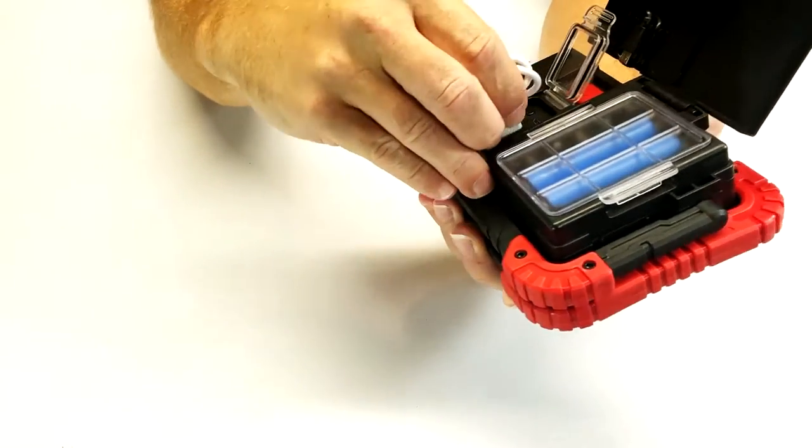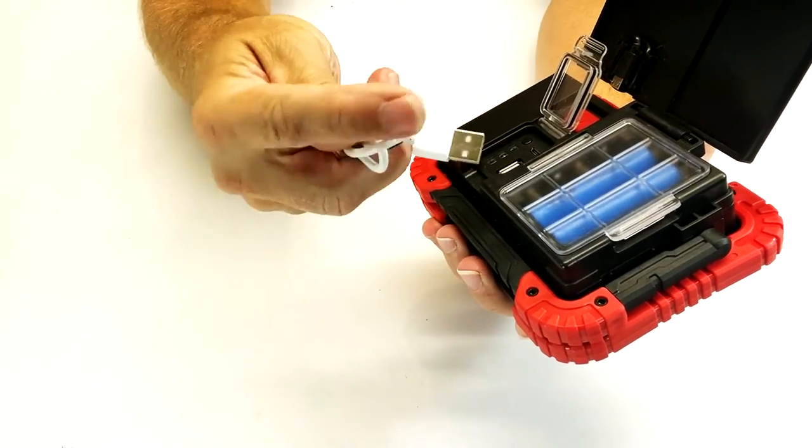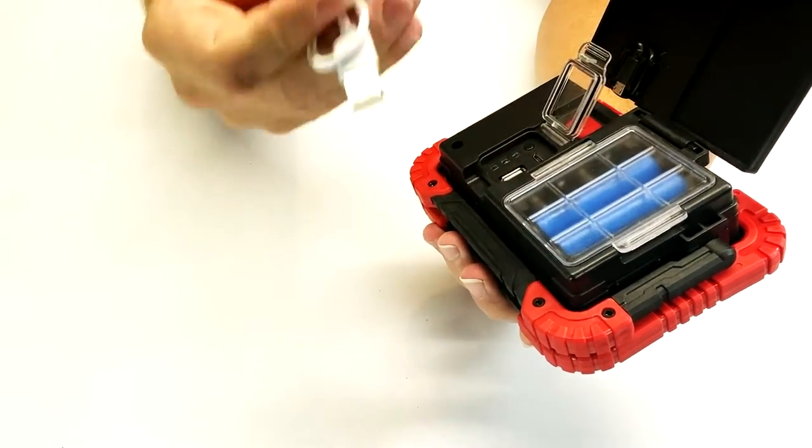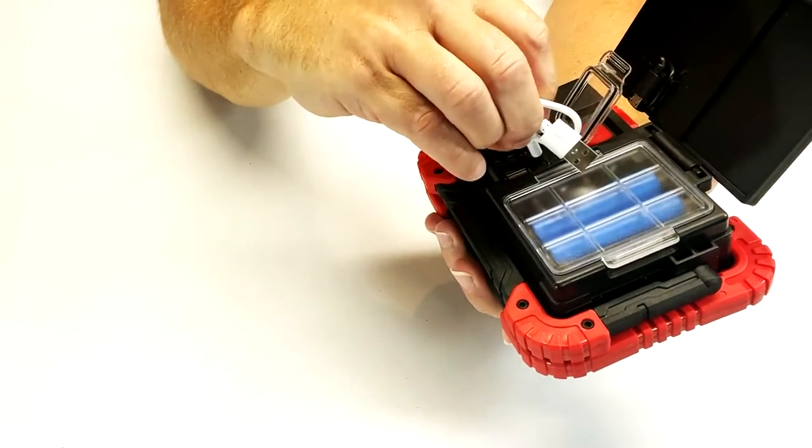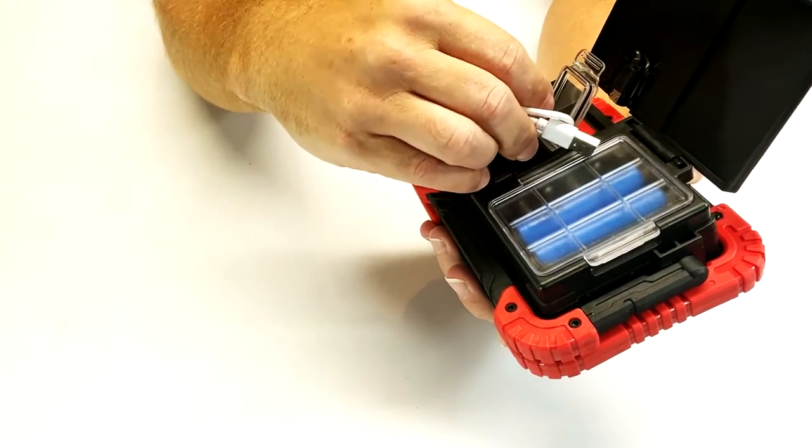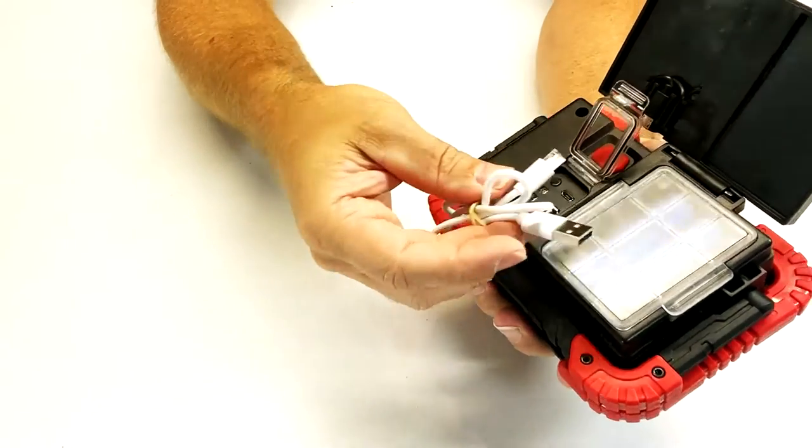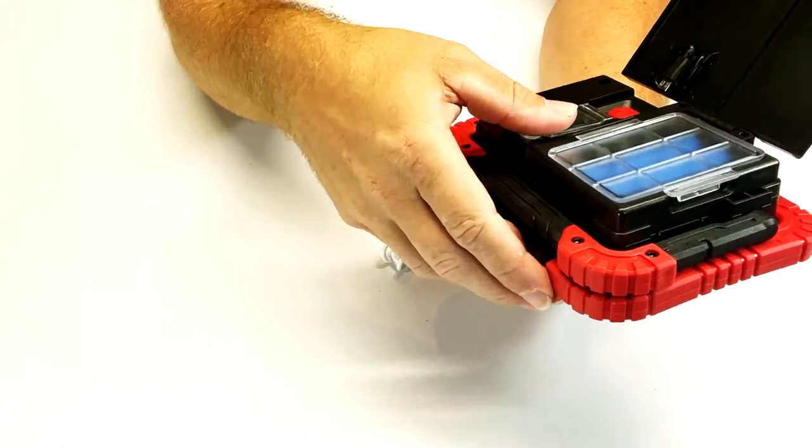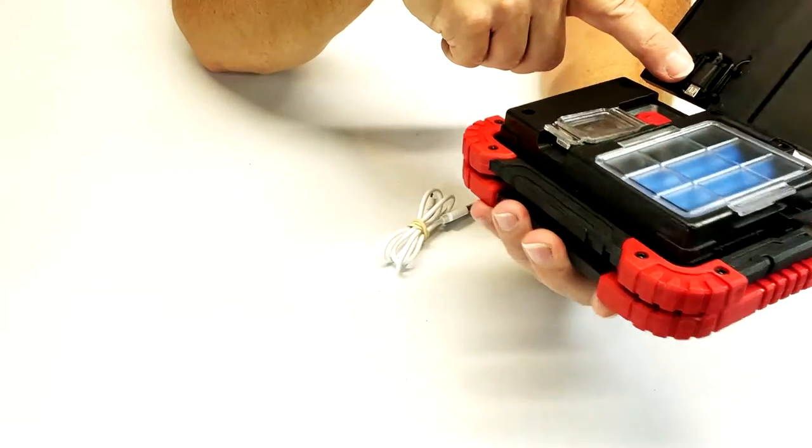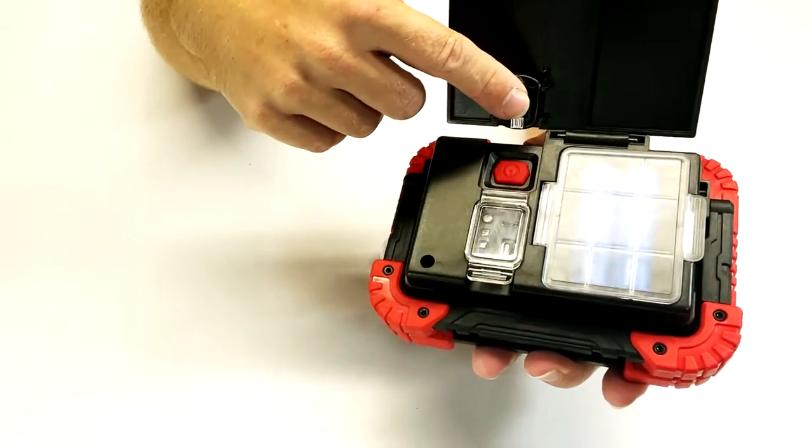And then you can also charge this with this cord, the micro USB cord into your input. You just plug it in there and then plug it into the wall. So that's another way that you can charge this. And you can also use the solar panel.